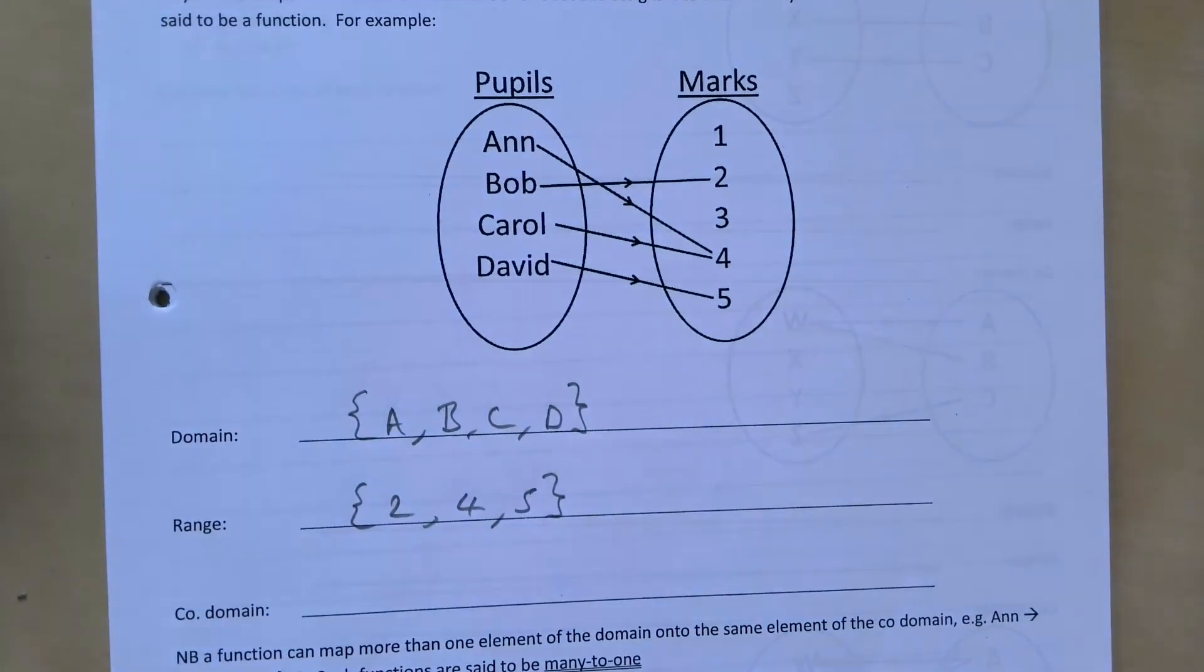And the co-domain were all the possible options that they could have had, and that of course then is 1, 2, 3, 4, and 5.